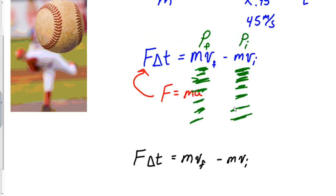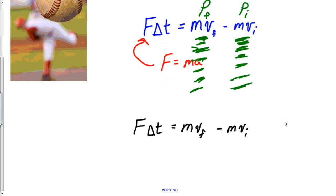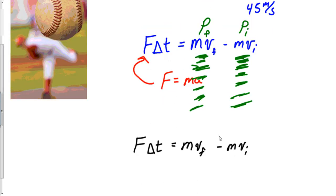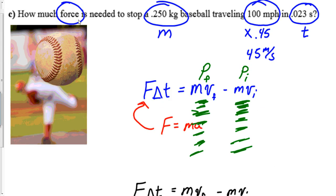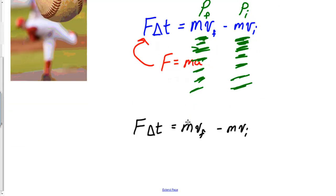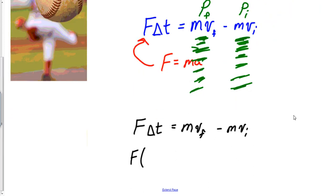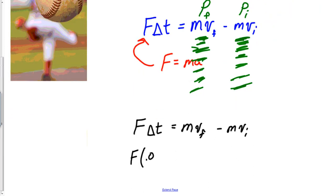A lot of physics students don't use the FAT equation a lot. I love using the FAT equation. This problem asked me to find force. F, it said that time was 0.023, so for delta t I'm going to write 0.023 equals mass.